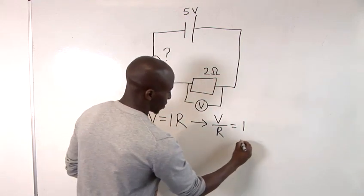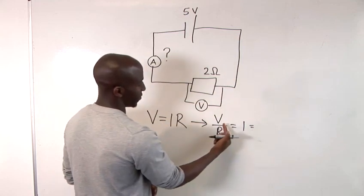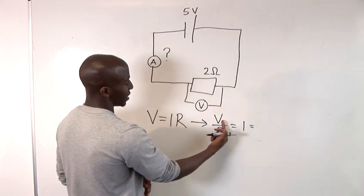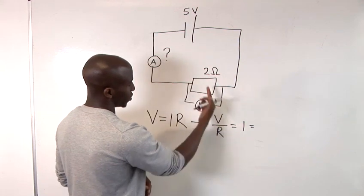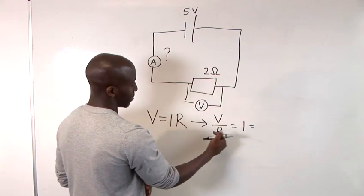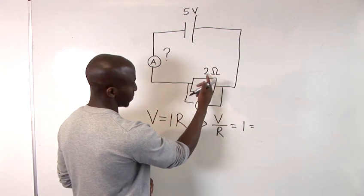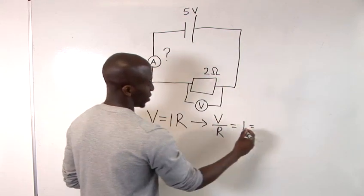If you take a look at that, we can insert the values for V and R. Your voltage is 5 volts and your current can be simply calculated by dividing your voltage by your ohms.